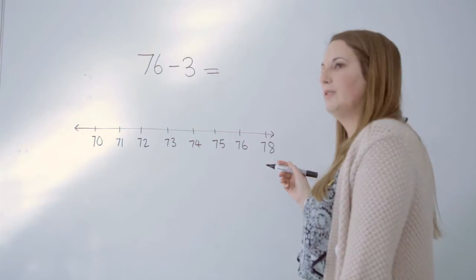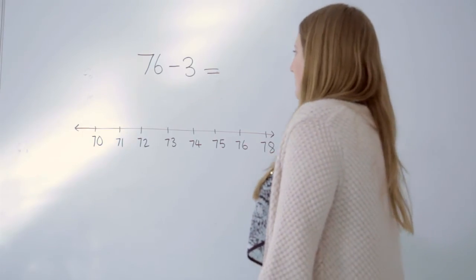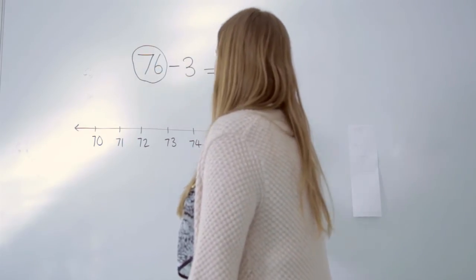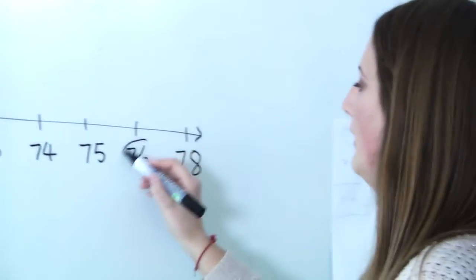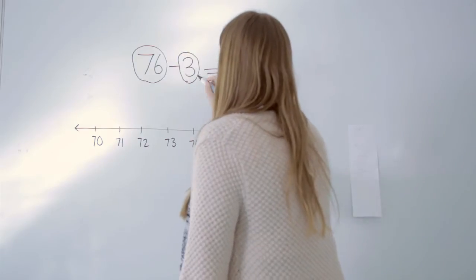Children move on from using a hundred square onto an already numbered number line. So again, they look for the number that they're taking away from, find it on the number line and then look at the number they are taking away.